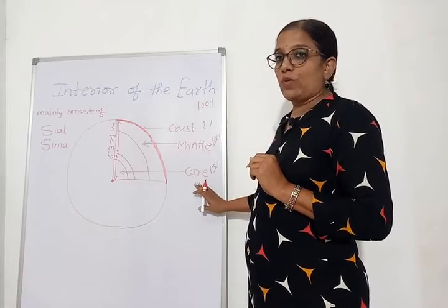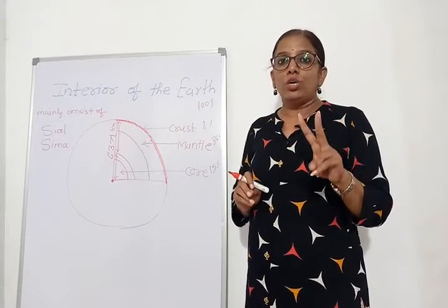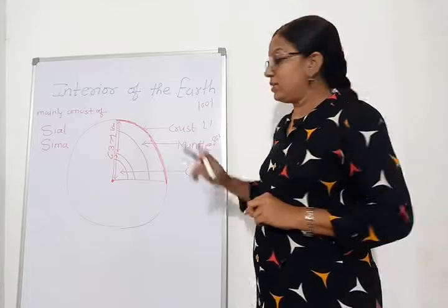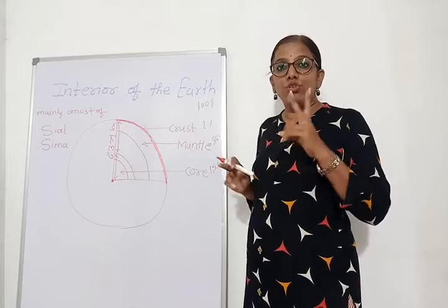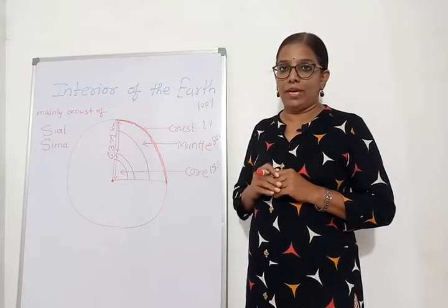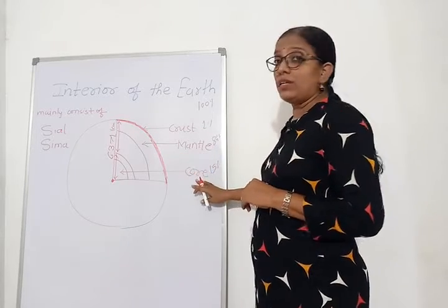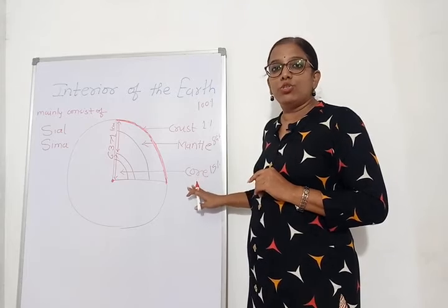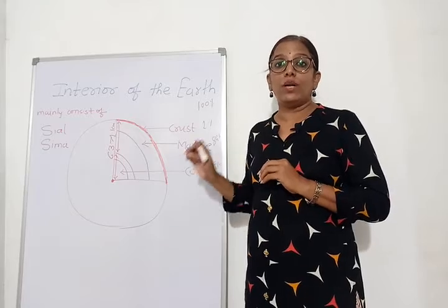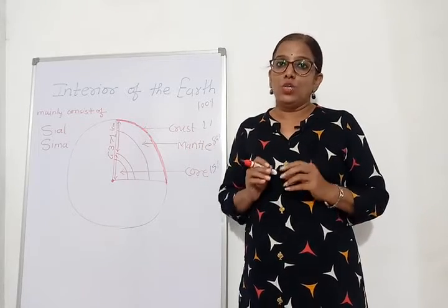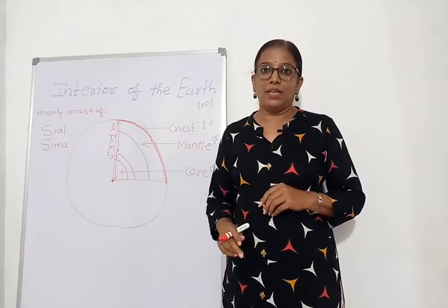So these are the three layers of the earth. First is the crust — the thinnest layer, divided into continental crust and oceanic crust. Second is the mantle, divided into upper mantle and lower mantle, which is in a semi-solid state. Third is the core, divided into inner core and outer core, with a temperature equivalent to the surface of the sun. This is all about the interior of the earth. I hope you understand it. Thank you so much.